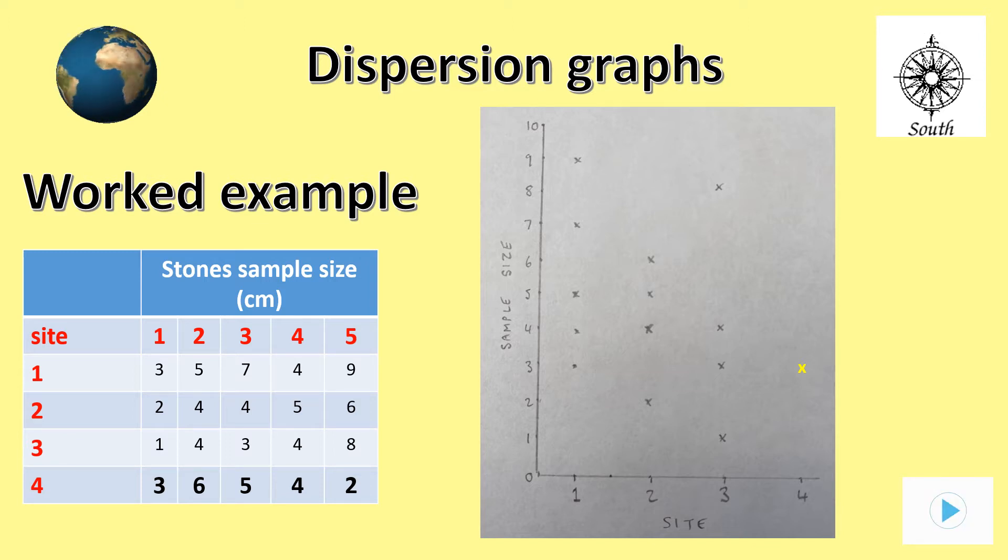Site 4, however, is what is going to be done. The first one has been done which is site 4, stone 1, 3. The next stone to plot has a size of 6 cm. I carefully find 6 cm on the vertical axis and place a cross where it meets site 4. I then repeat the process with the other numbers in bold from the table, taking care to make sure I am matching the correct stone size with the vertical axis and site 4. Double-check each answer before you move on.